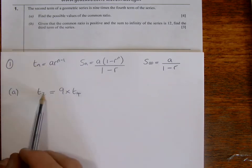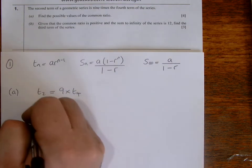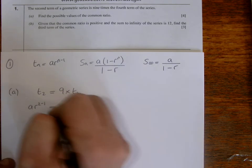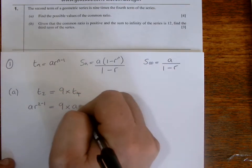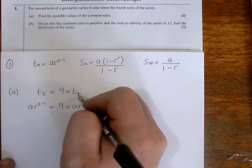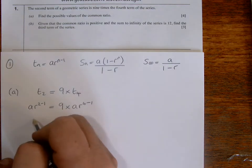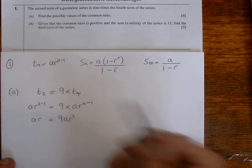So T2, n will be 2 here. So we have AR to the power 2 minus 1 equals nine times AR, and then we've got n will be 4, so 4 minus 1. So this is the same then as AR equals nine AR cubed.